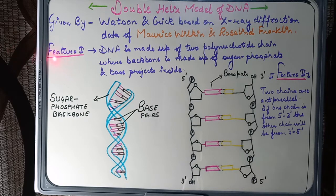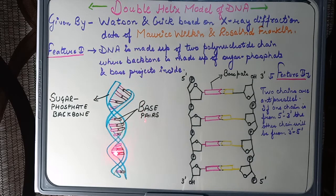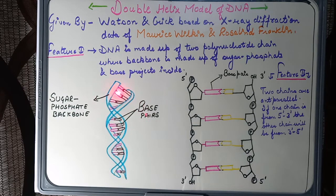According to Feature 1, DNA is made up of two polynucleotide chains. As you can see in the diagram, here are the two polynucleotide chains of DNA. The backbone of these chains is made up of sugar and phosphate, while between the two polynucleotide chains, base pairs are projecting.